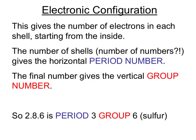So recapping, the electronic arrangement or configuration gives us the number of electrons in each shell, starting from the inside. The number of shells, which is the number of numbers in our configuration, gives the horizontal period number. And the final number, the number in the outer shell, gives us the group number.